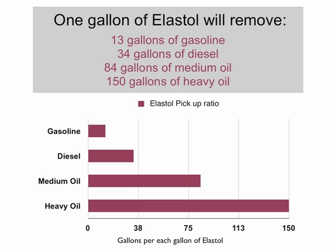One gallon of Elastal is sufficient to allow removal of 13 gallons of gasoline. Since diesel is heavier, 1 gallon of Elastal will allow pickup of 34 gallons of diesel. Since medium and heavy oil are denser still, 1 gallon of Elastal will allow pickup of 84 gallons of medium oil and 150 gallons of heavy oil. These figures are conservative and usually lesser amounts of Elastal can be used.